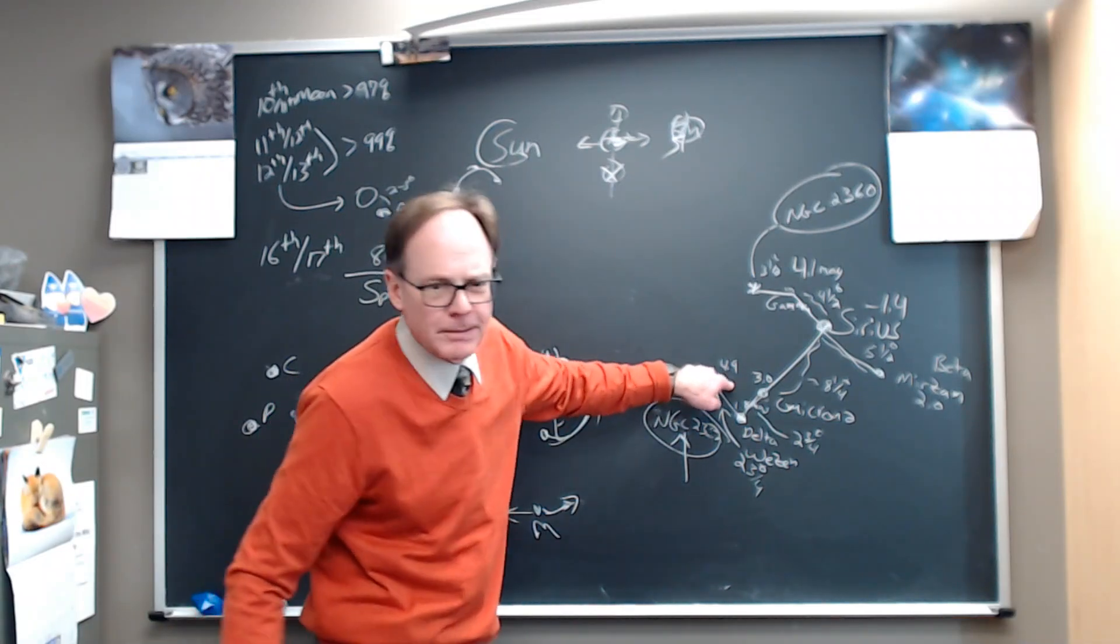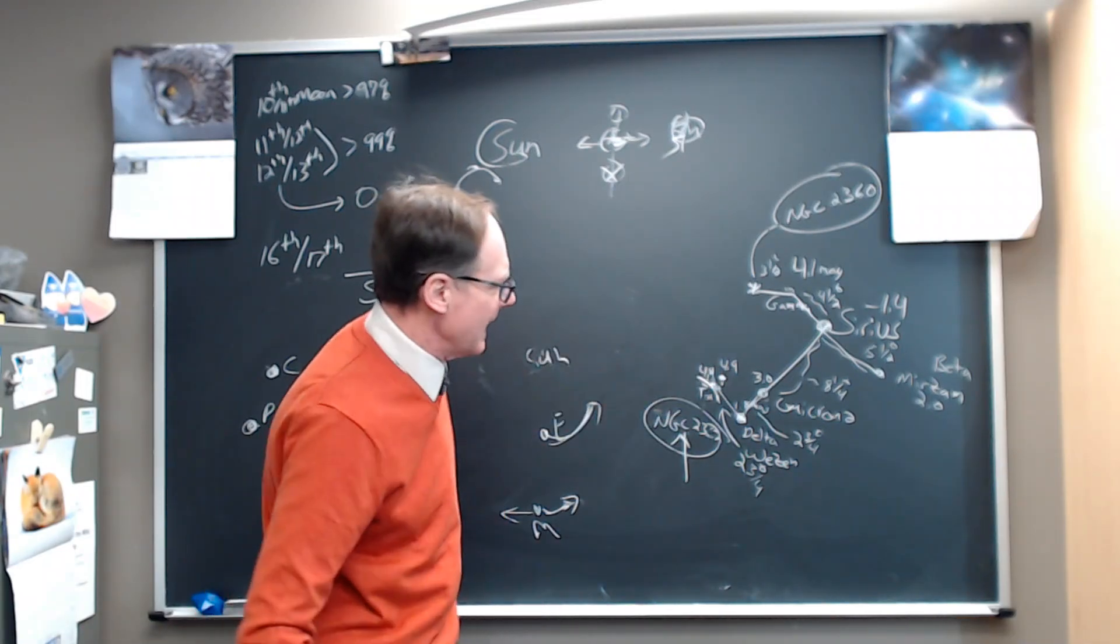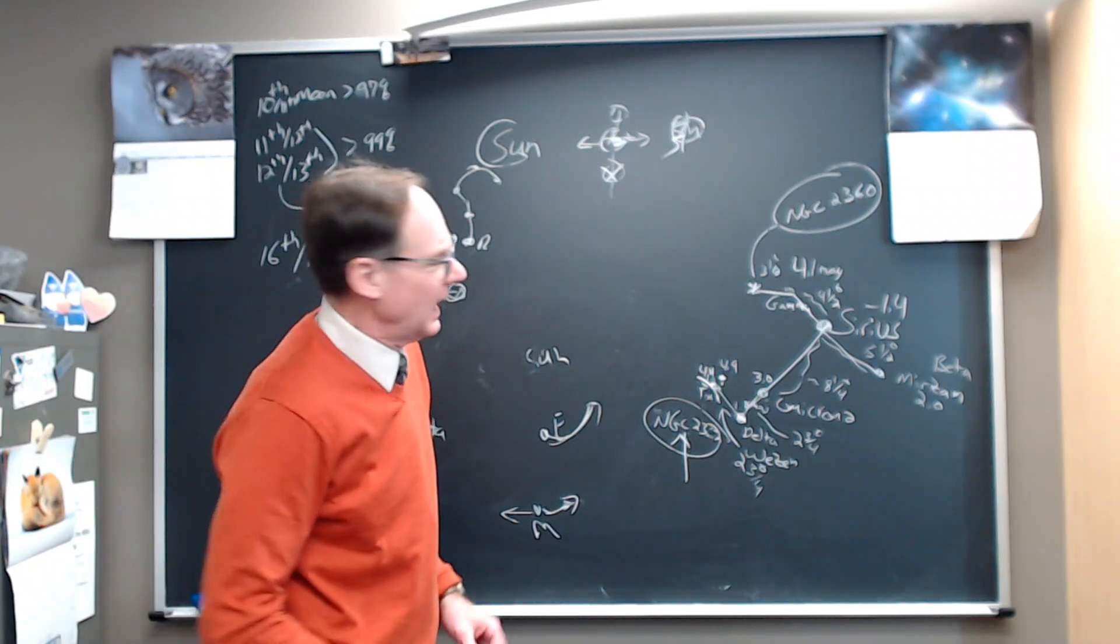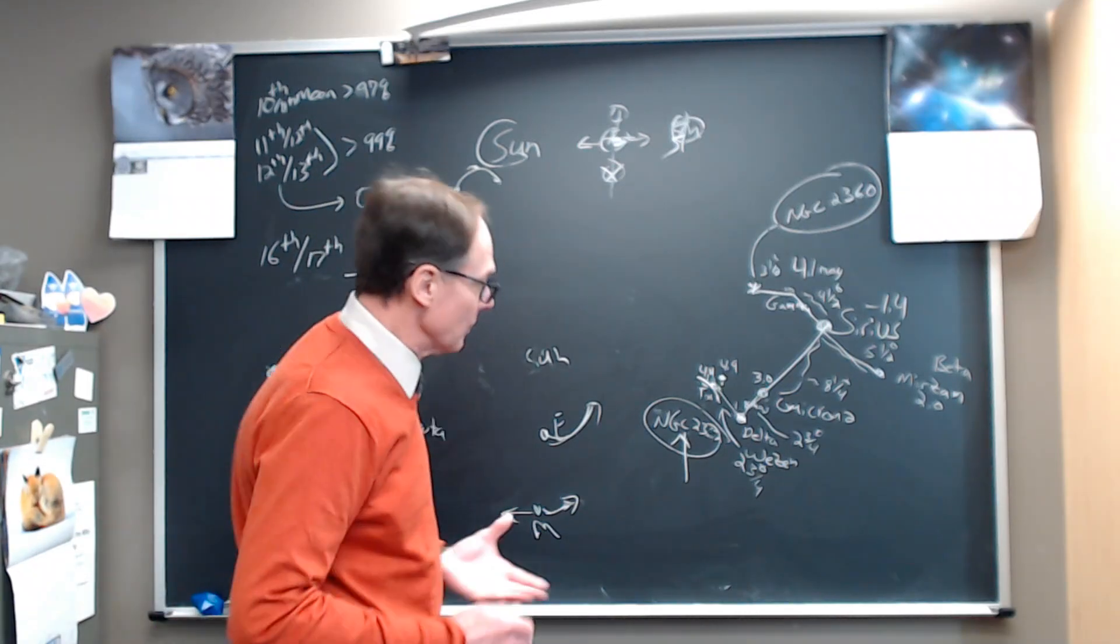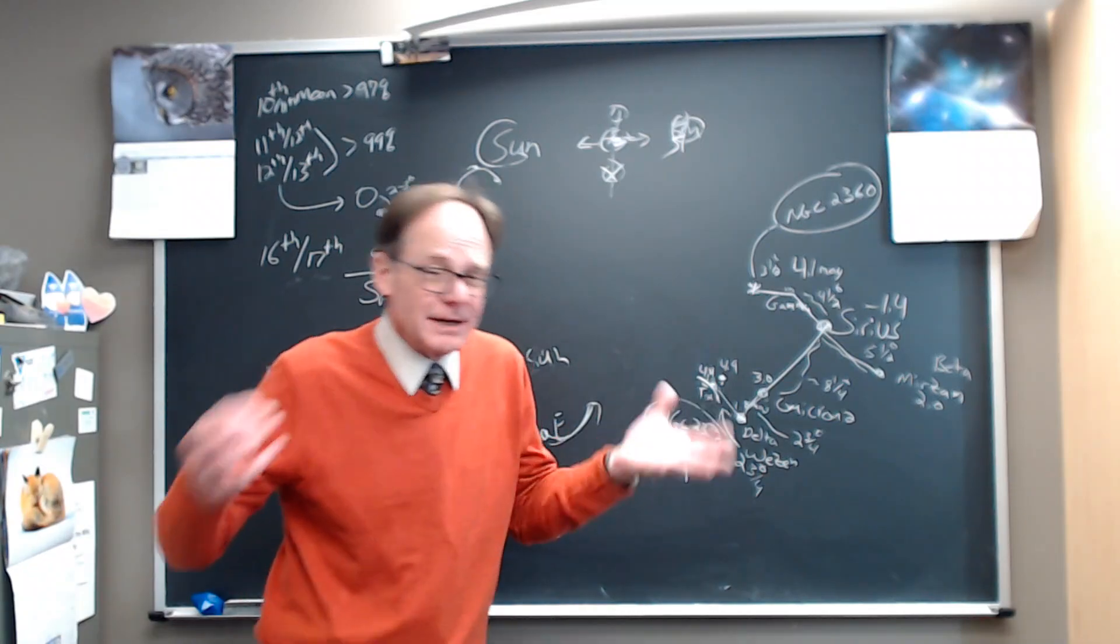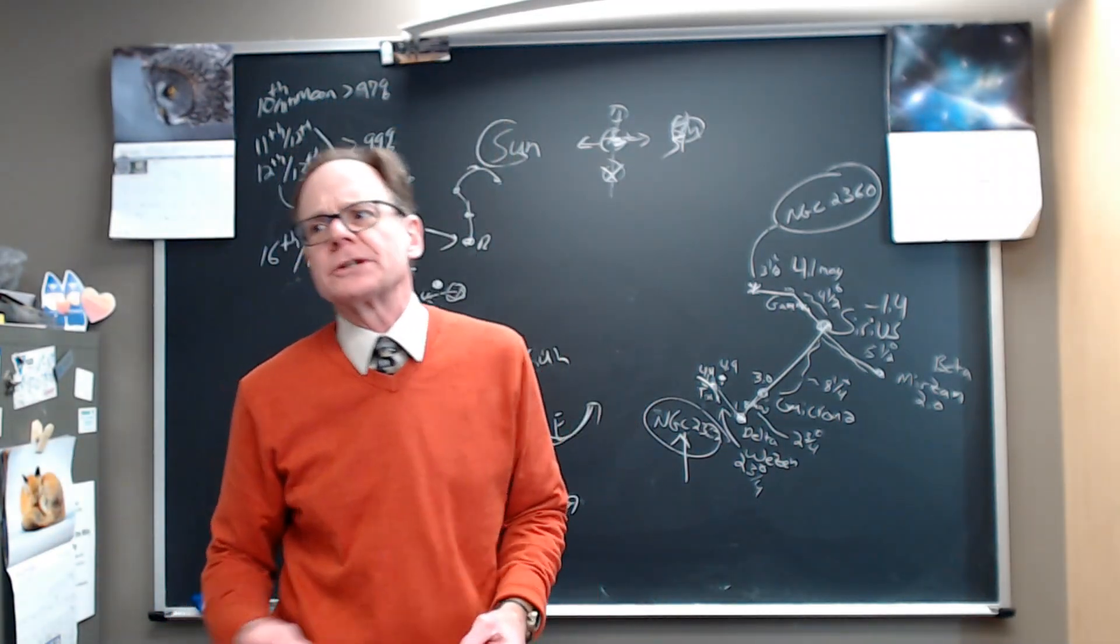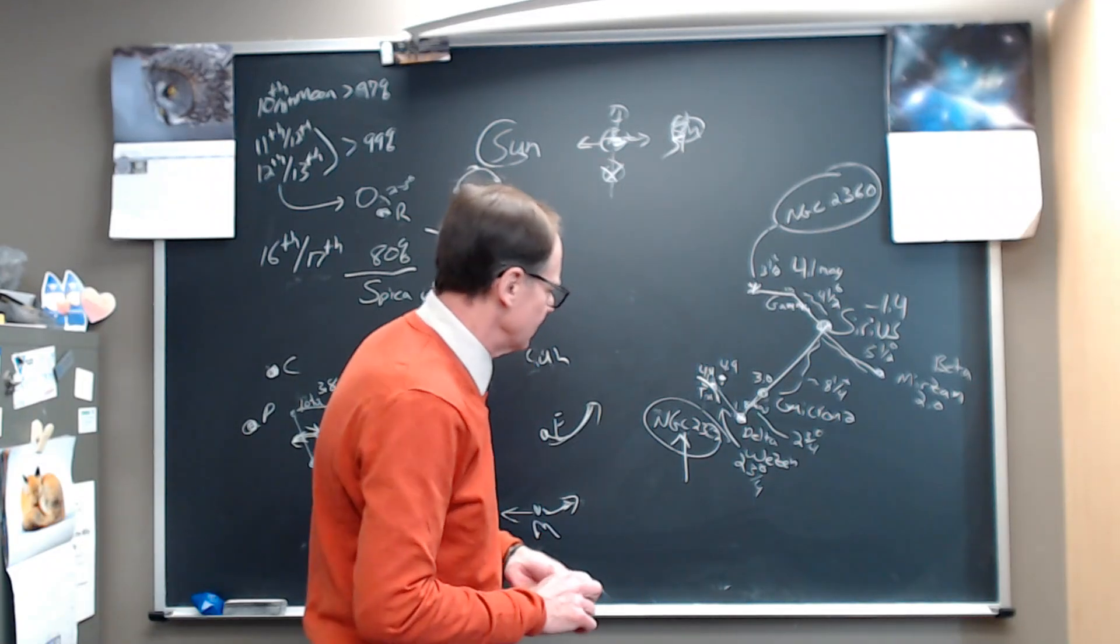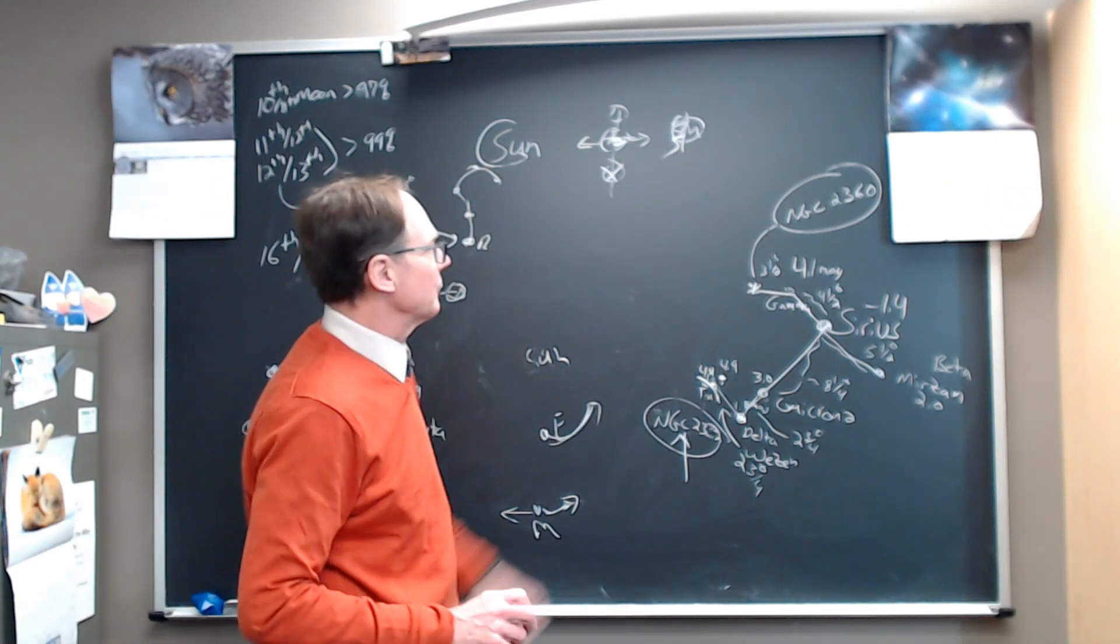But see if you can find Tau and its companion over here, 4.4, 4.9 magnitude, getting down at the edge of naked eye visibility for most of us. Binoculars will surely help you pull that out. And maybe binoculars, you can see this open star cluster too, but it's a pretty tight open star cluster. So a small telescope is going to be better for that.